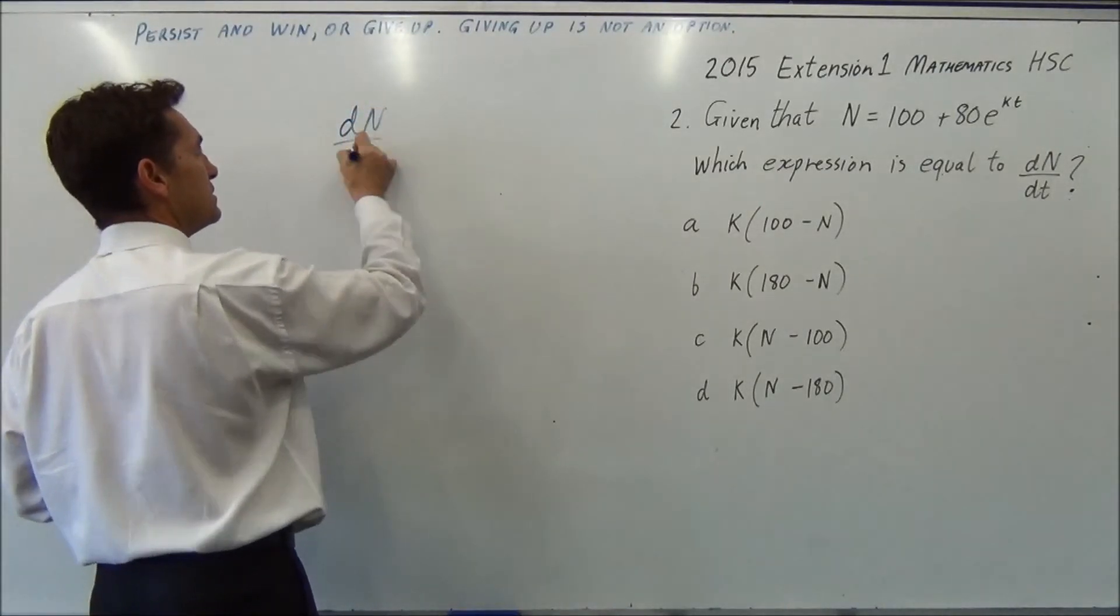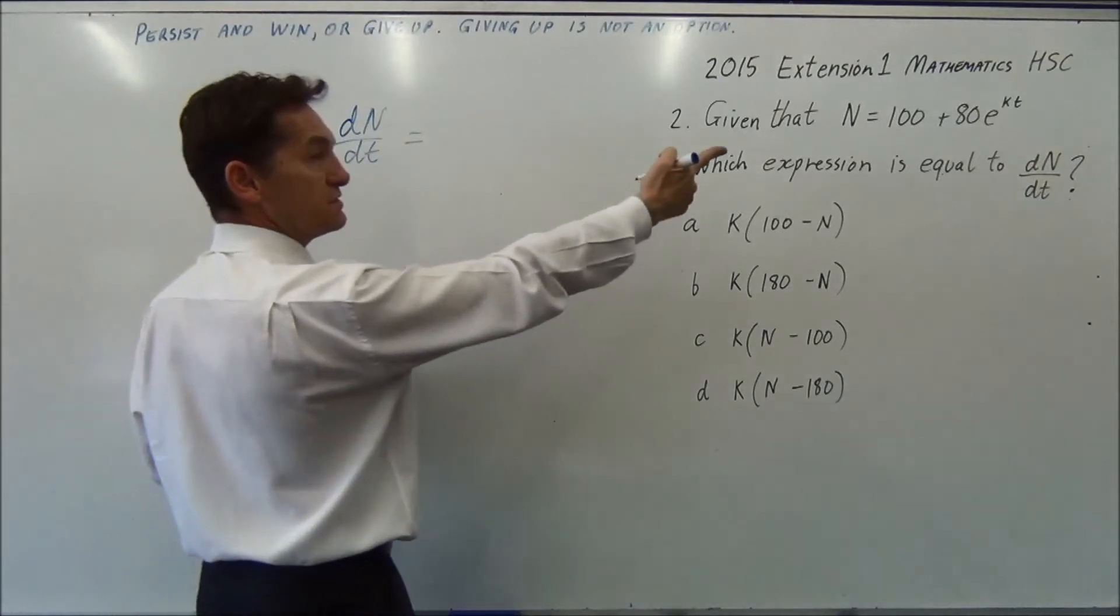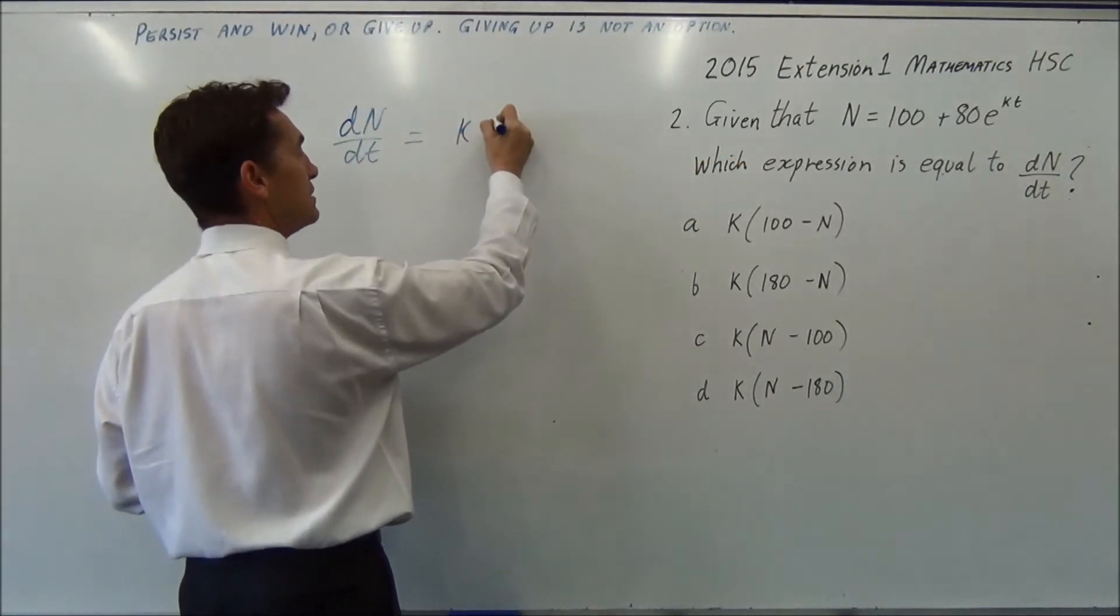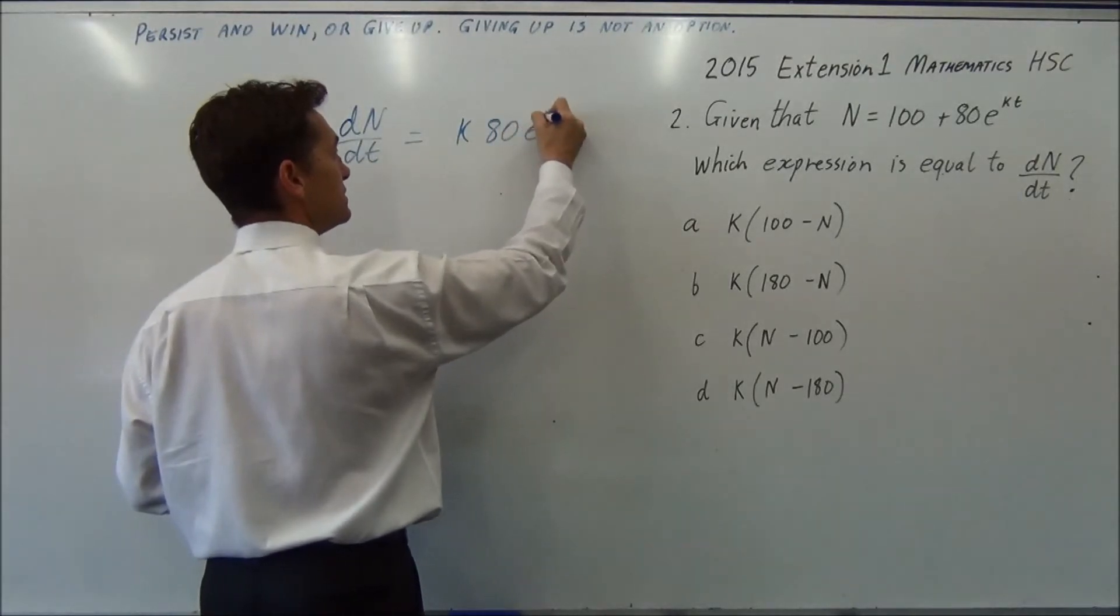So dn to t equals, differentiate that, the 100 disappears and you get k times 80e to the kt.